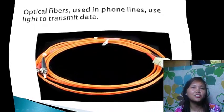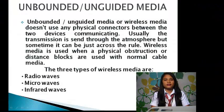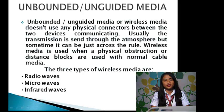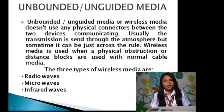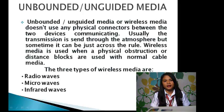The second category of transmission media is unbounded media. Unbounded media, or wireless media, does not use any physical connectors between the two communicating devices. Usually the transmission is sent through the atmosphere, but sometimes it can be just across a room. Wireless media is used when a physical obstruction or resistance makes normal cable media impractical. There are three types of wireless media: radio waves, microwave, and infrared waves.